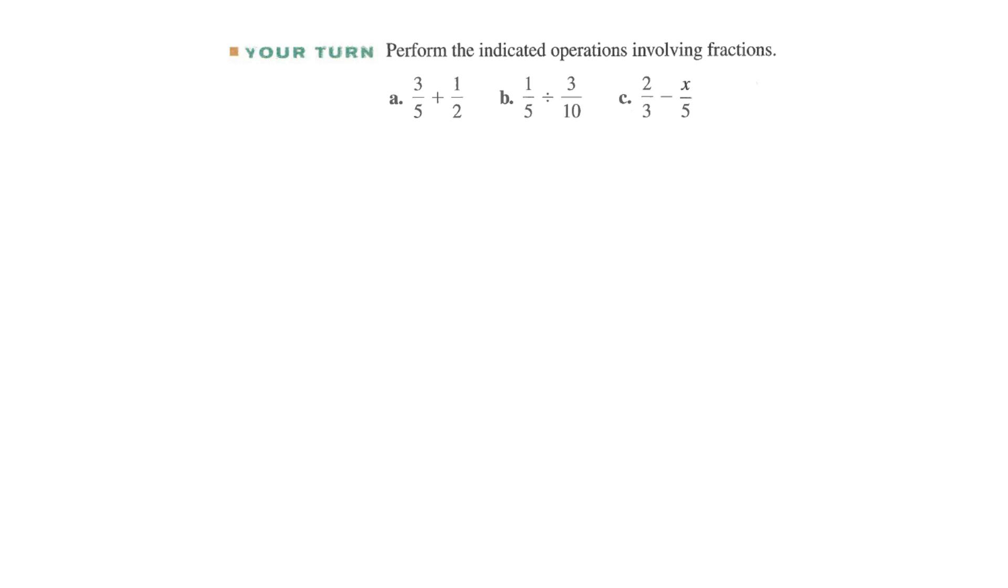Let's review our fractions, see if you can do these. See what we got. On this one, common denominator is 10. 3 times 2 is 6. 5 times 1 is 5. So here we would have 11 over 10. On our next one, we're going to multiply by the reciprocal. So we're going to say 1 over 5 times 10 over 3. And multiply straight across. 10 over 15. Can you reduce that? 2 over 3, because you can divide both of them by 5. And last one, 2 over 3 minus x over 5. So common denominator here is going to be 15. And we'll have 2 times 5 is 10. And 3 times x is 3x. So 10 minus 3x over 15.